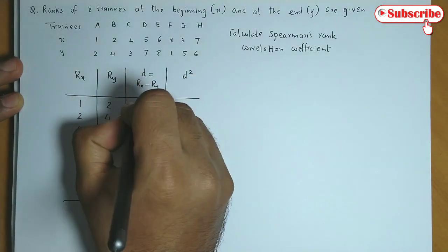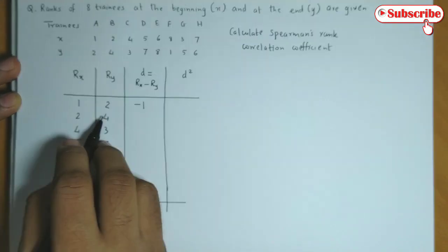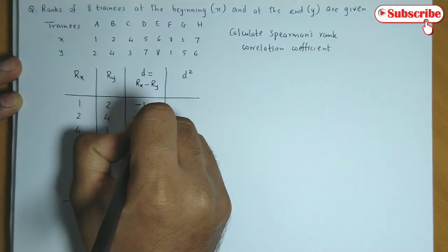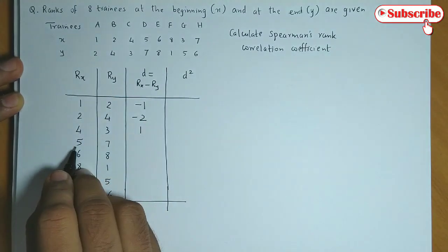Now the difference between the ranks. So 1 minus 2, 2 minus 4 that is minus 2, 4 minus 3 is 1, this difference is minus 2.